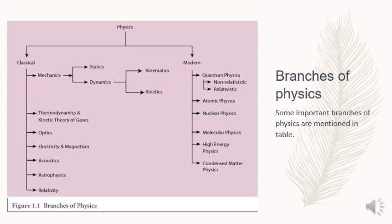Physics is divided into classical and modern, two types. Classical physics includes mechanics, kinematics and dynamics, optics, electricity and magnetism, acoustics, astrophysics, and relativity. Modern physics includes quantum physics, non-relativistic and relativistic atomic physics, nuclear physics, molecular physics, and condensed matter physics.